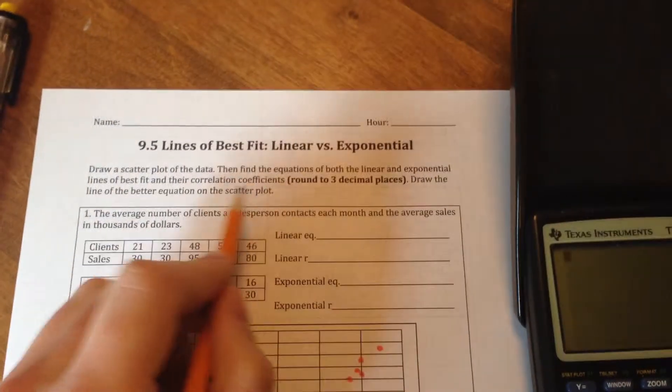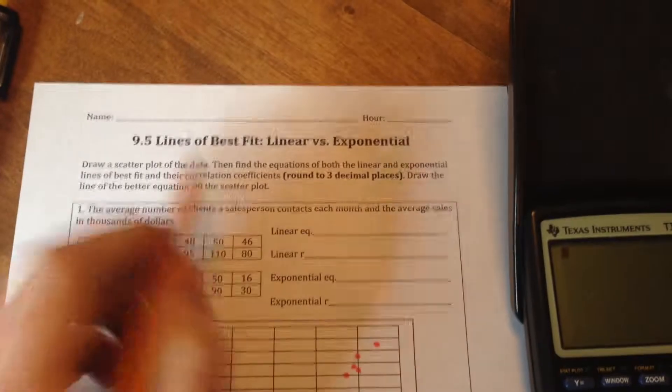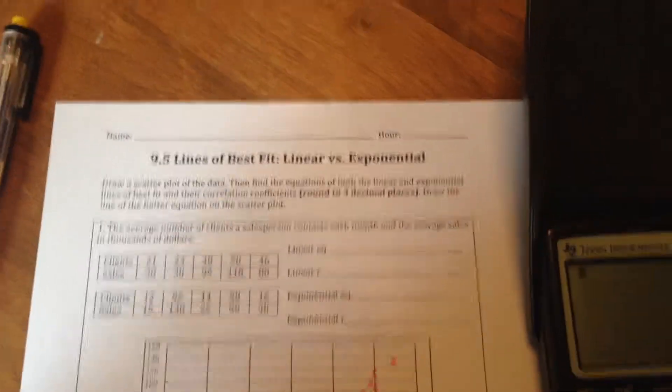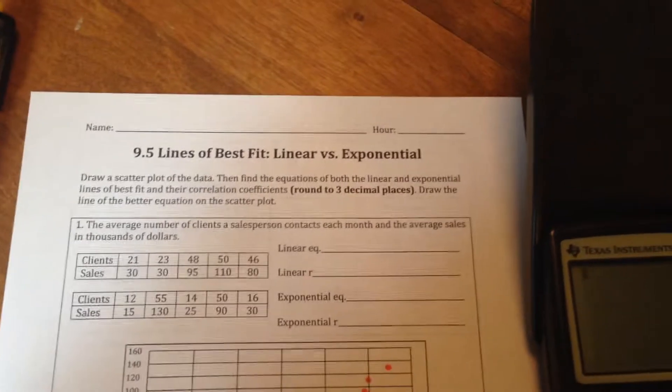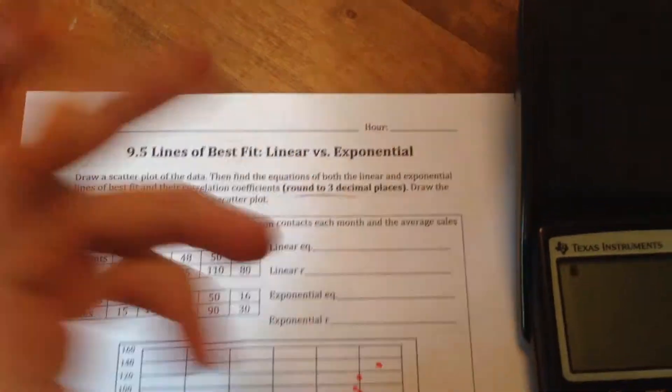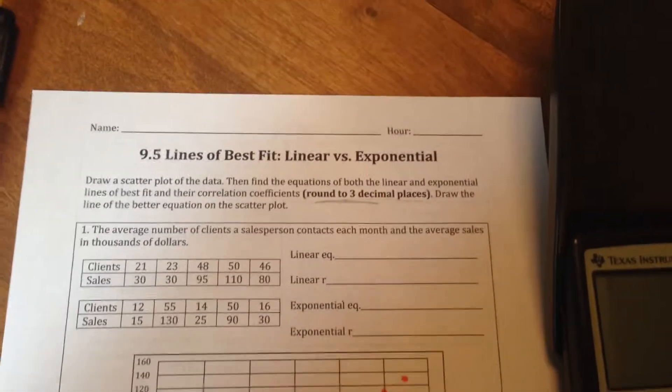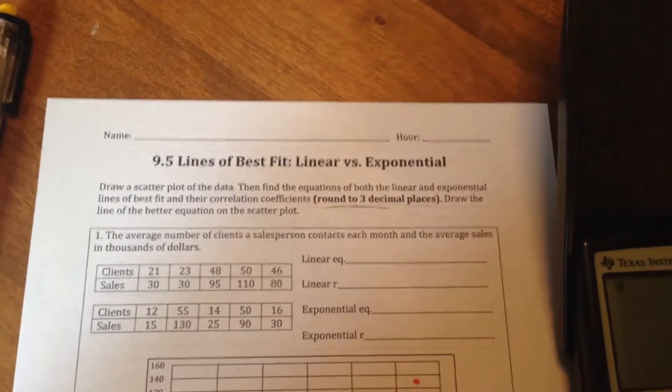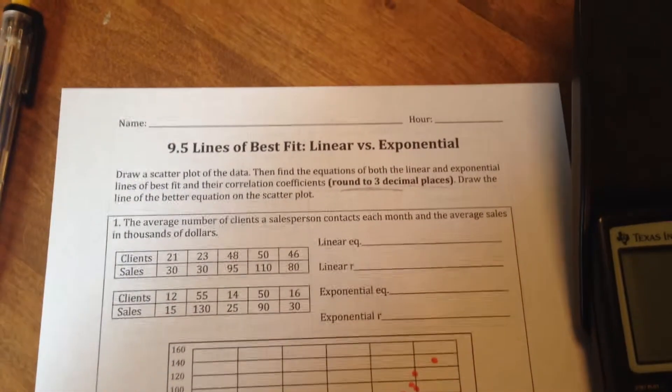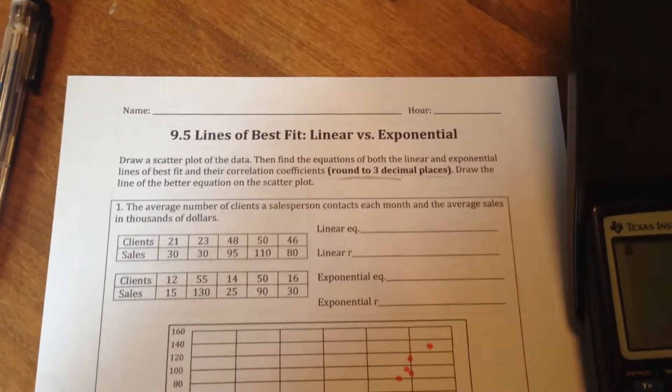Make sure you read these instructions. We need to draw a scatter plot of the data. Then we need to find the equations for the lines of best fit. But we need to do that for both the linear equation and the exponential equation, since those are both the types of equations we've been dealing with this year in Secondary 1. We also need to find the correlation coefficients that go with both of those sets of data. Those are also known as regression numbers.